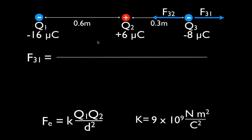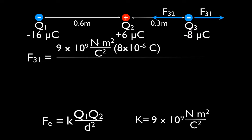Now we're going to calculate the magnitude of F31 — the force on Q3 from Q1 — using Coulomb's law. K is 9×10⁹ N·m²/C². The charge on Q3 is 8 microcoulombs and the charge on Q1 is 16 microcoulombs. The distance separating them is 0.9 meters. We had to convert our microcoulombs into coulombs since the constant has coulombs in it. Micro is 10⁻⁶, so I put 10⁻⁶ on the back of 8 and on the back of 16 — it's 16 microcoulombs, not 1.6. That allows the coulomb units to cancel.